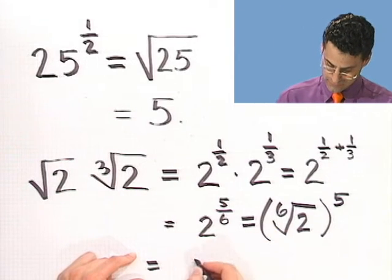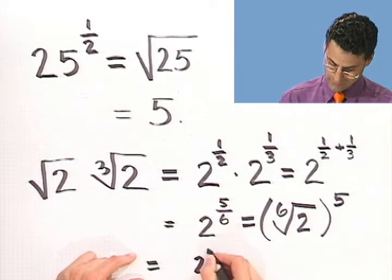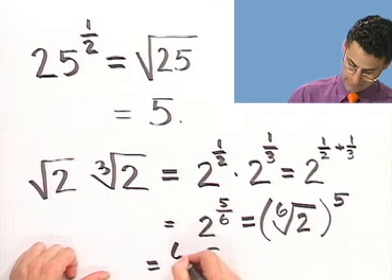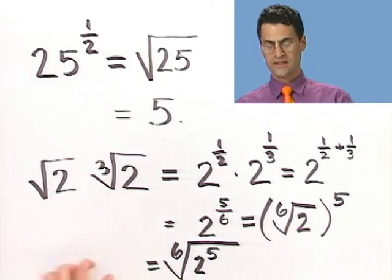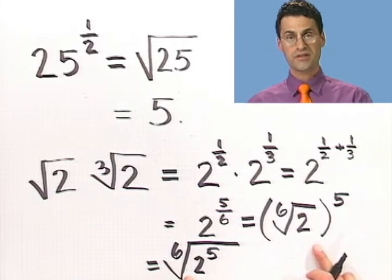And then I'll take the sixth root of all of that. And in fact, these two things are the same. So notice the difference here. First, I'm taking 2 and raising it to the fifth power, taking that answer and sixth rooting it.